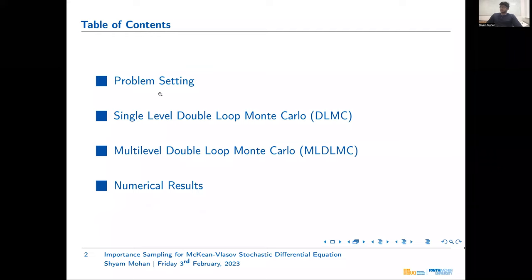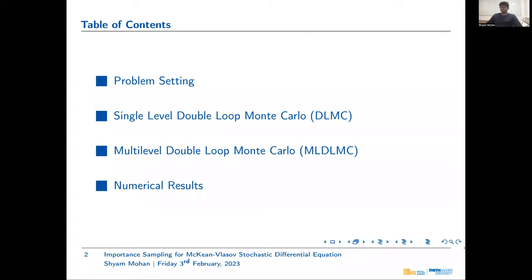In the first part, I want to introduce the stochastic differential equation that we are interested in and the associated notation, along with the problem at hand. Then I will introduce the double-loop Monte Carlo estimator we developed to estimate rare event probabilities associated with the McKean-Vlasov SDE. Then we extend this estimator to the multi-level setting, and at the end we apply our estimators to a simple one-dimensional example.